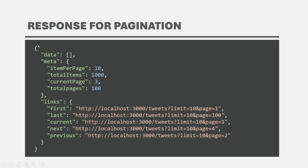In the response, we want to have an object, and for that object we want to have a data property which should be an array of paginated data. Then we want the meta property, which should be an object with properties like items per page, total items, current page, and total pages. And then we also want to have a links property, also storing an object with links for the first page, last page, current page, next page, and previous page for that paginated data.